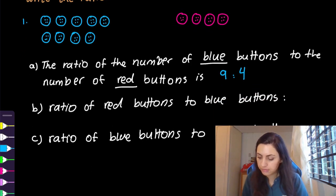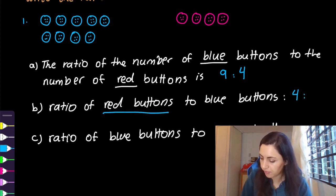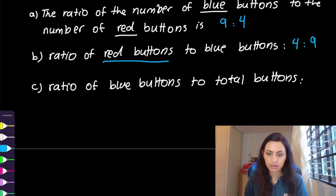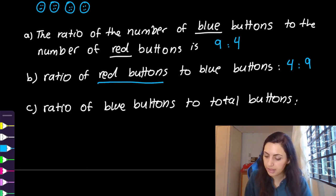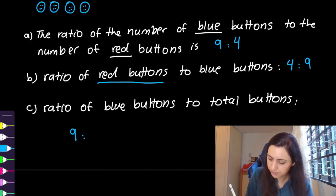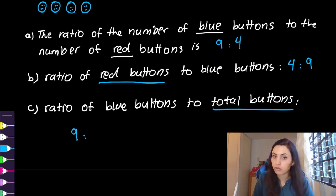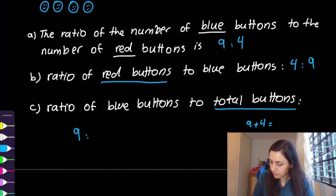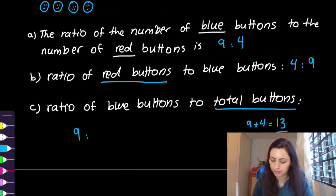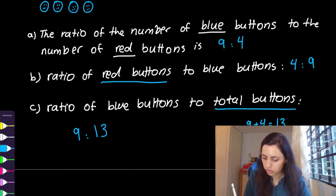Part B: ratio of red buttons to blue buttons. We said red first, so red is four, and blue is nine — so it's 4:9. Part C: ratio of blue buttons to the total. Blue is nine. Total buttons: nine plus four is thirteen. So it's 9:13.